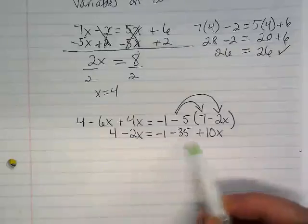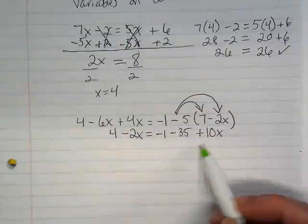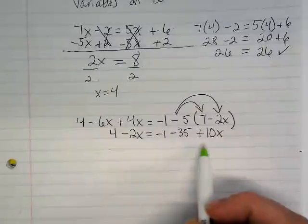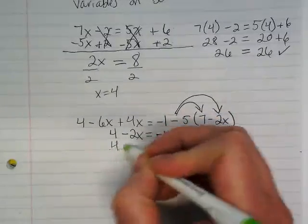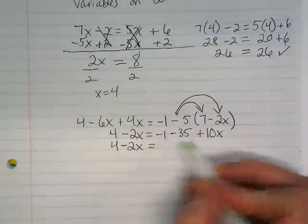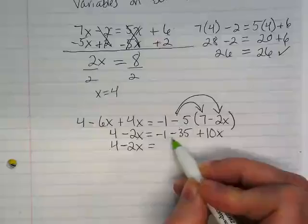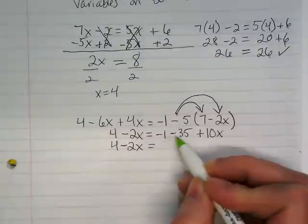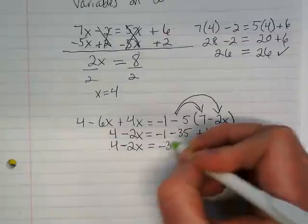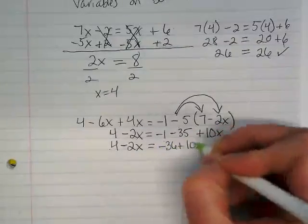And I still am going to simplify on the right side. That means the left side, I don't want to do anything with this until I've simplified this down to all like terms combined. So, I'm just going to rewrite this on this line. What gets combined here? Negative 1 and negative 35. It's going to be negative 36 plus 10x.